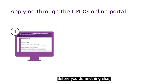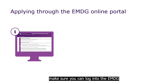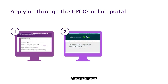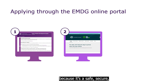Before you do anything else, make sure you can log into the EMDG Online Portal. To do that, you'll need a Government Digital ID. Austrade uses the Government's Digital ID system because it's a safe, secure and convenient way to prove your identity online.